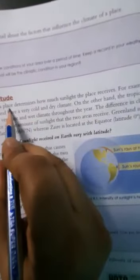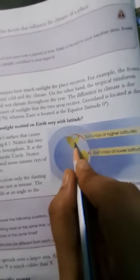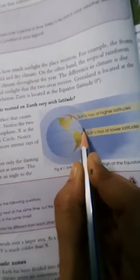So now we will see here effects of latitude. The latitude of a place determines how much sunlight the place receives. The latitude determines how much sunlight we are getting. For example, the frozen area of Greenland, the green line, has a very cold and dry climate. On the other hand, the tropical rainforest, the tropical area of Zaire, has a very hot and wet climate throughout the year. The difference in climate is due to the difference in the amount of sunlight that the areas are receiving.